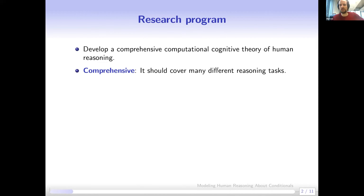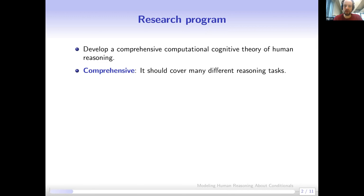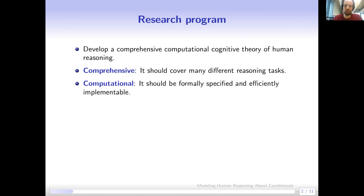A comprehensive theory should cover many different reasoning tasks — not one specifically geared to very specific tasks, but one that encompasses many different reasoning tasks. By 'computational' we actually mean two things: on one hand it should be a formally specified theory, and also ideally it should be efficiently implementable.